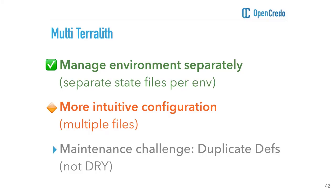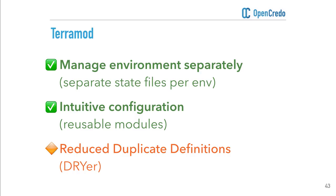Going back to compare: the multi-Terralith had at least managed to evolve the environments separately and provided more intuitive configuration. With the TerraMod setup, we've taken that intuitive configuration much further — when you look at an environment you can say, oh, my environment is composed out of a Kubernetes cluster, a database, and a core module. We've also gone a long way to reducing duplicate definitions. Previously we were duplicating everything in test and production; now we're composing with modules and just passing in different values — making the setup a lot more DRY, or Don't Repeat Yourself.